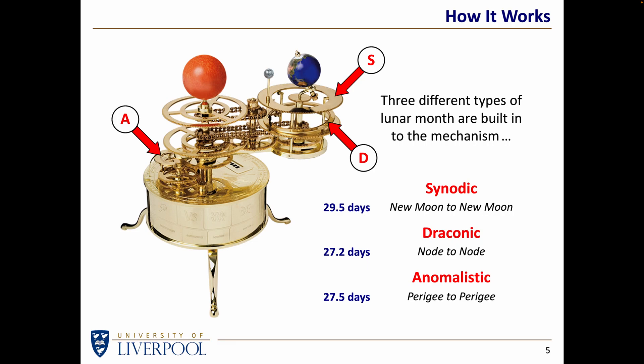This is why one eclipse is never quite the same as the next. Even if the Moon is back in the new Moon position and at a node to give us an eclipse, we're not necessarily at the closest point again, because the 27.5-day period is not the same as the 27.2-day period, and hence the Moon will be at a slightly different distance from Earth. So the length of a total eclipse will be slightly different, or perhaps it'll go from being a total eclipse to an annular eclipse, because the distance to the Moon will change.